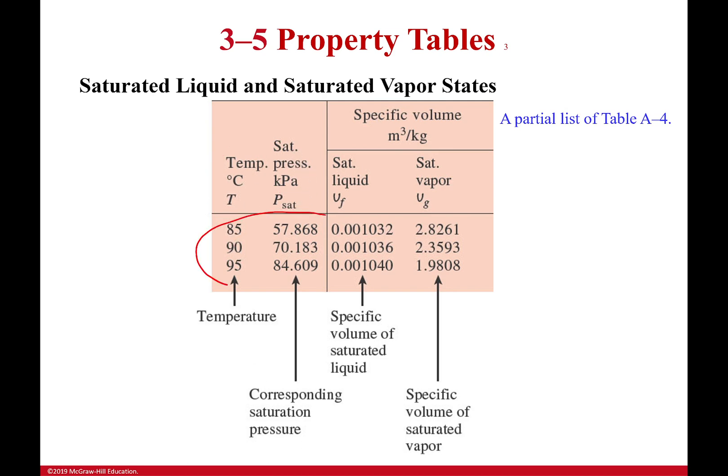Now, for these two columns right here, it really does not matter. Like, if you know that your pressure is 57.868 kilopascals and you know you're some sort of saturated liquid vapor mixture, then your temperature is this. You can go either direction. That both works out completely fine.